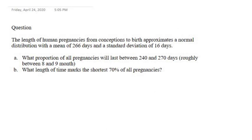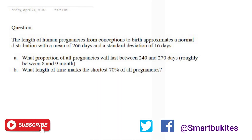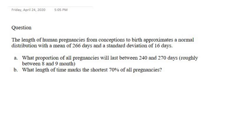Today we have a question still on our topic of probability — specifically on a normal distribution. The question is: the length of human pregnancies from conception to birth approximates a normal distribution with a mean of 266 days and a standard deviation of 16 days. What proportion of all pregnancies will last between 240 days and 270 days — roughly between eight to nine months? Part B asks: what length of time marks the shortest 70 percent of all pregnancies?